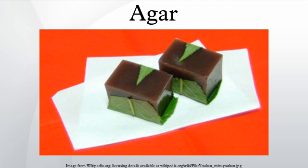Agar was discovered around 1658 by Minoia Tara Zeman in Japan, an innkeeper who was said to have discarded some surplus seaweed soup and noticed that it gelled after a winter night's freezing. Agar was first used in microbiology in 1882 by the German microbiologist Walther Hess, an assistant working in Robert Koch's laboratory on the suggestion of his wife Angelina Fannie Alchemis Hess. He discovered that it was more useful as a solidifying agent than gelatin, due to its better solidifying temperature.